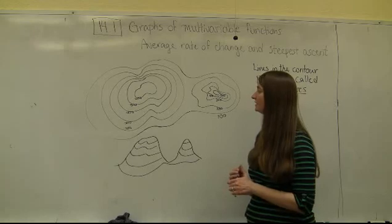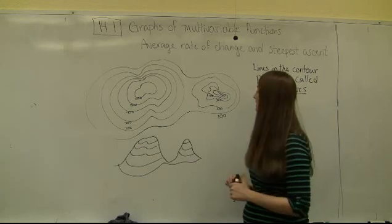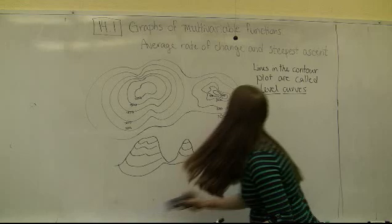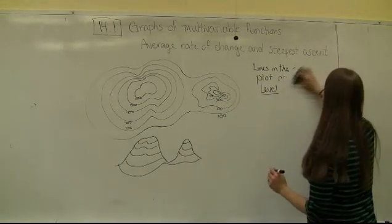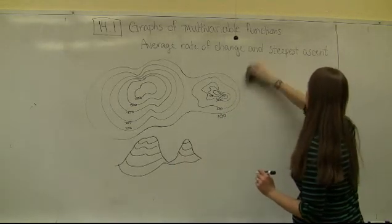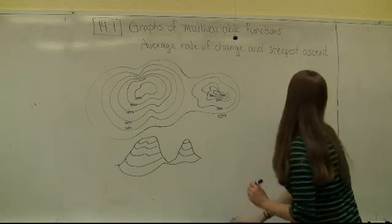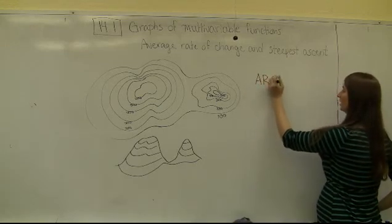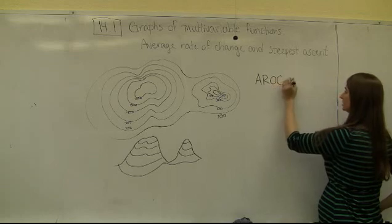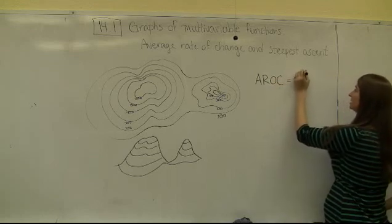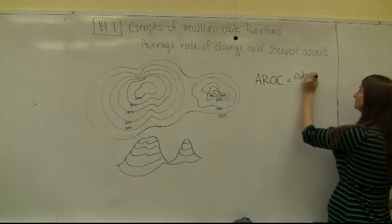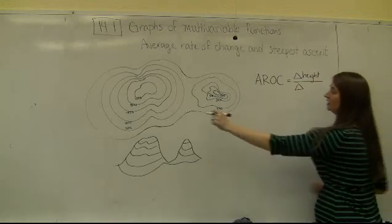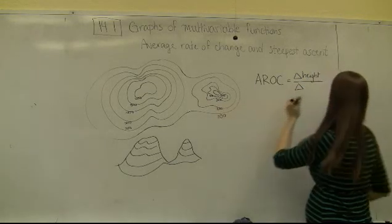If I want to know the average rate of change given this plot, that's asking how fast am I ascending. The equation for average rate of change is the change in vertical height divided by the change in horizontal distance.